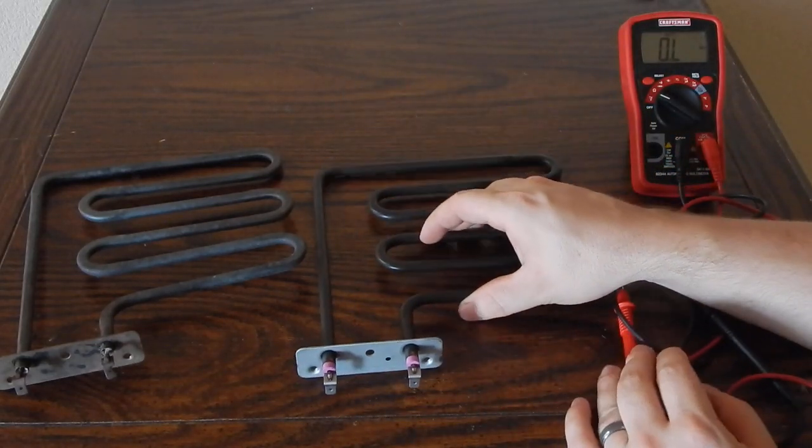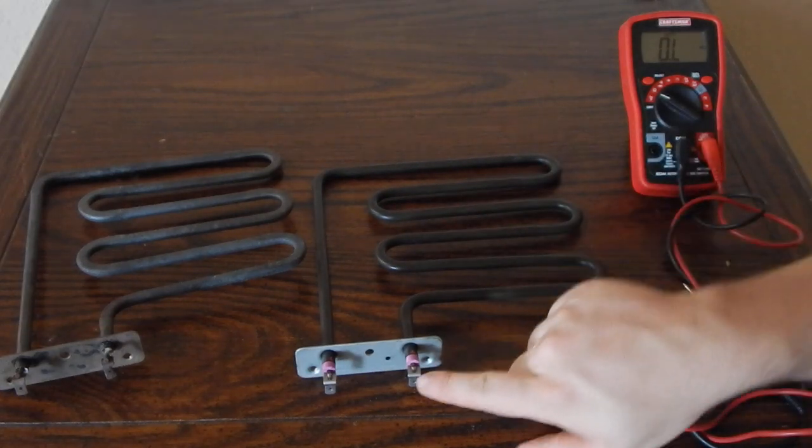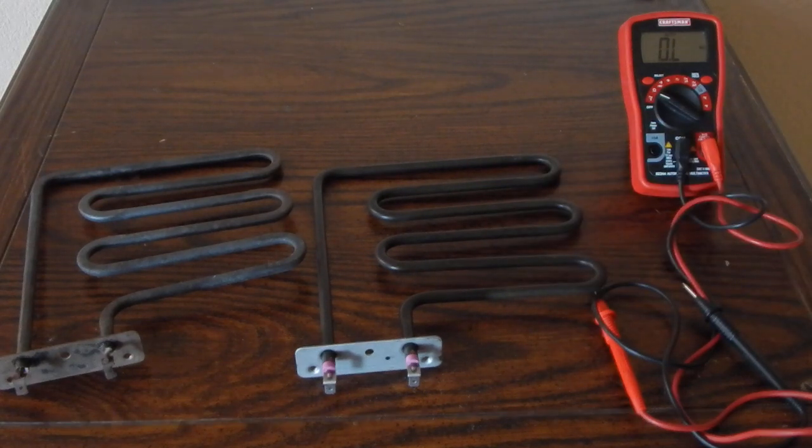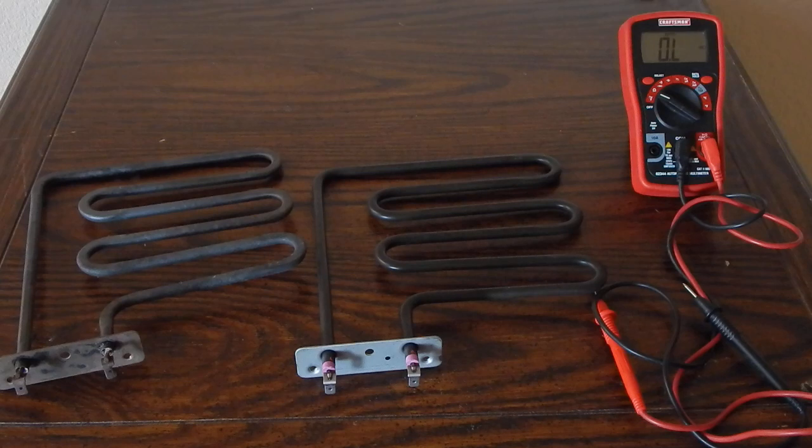And that's pretty much all there is to it. But you do need to check and make sure that there's no continuity between this lead here and the outside casing. If there is, then the coil is bad and you need to toss it and get a new one.